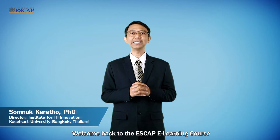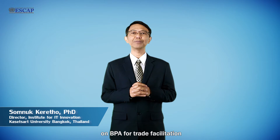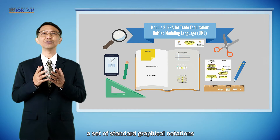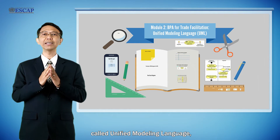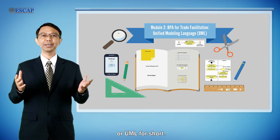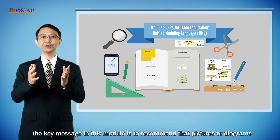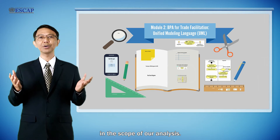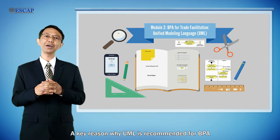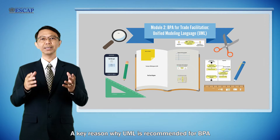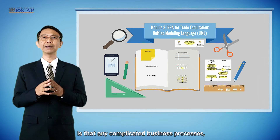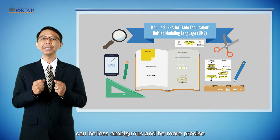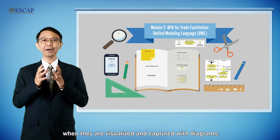Welcome back to the SCAP e-learning course on BPA for trade facilitation. In this module we are going to introduce a set of standard graphical notations called Unified Modeling Language, or UML for short. The key message in this module is to recommend that pictures or diagrams be used to capture and describe business processes in the scope of our analysis. A key reason why UML is recommended for BPA is that complicated business processes, especially those related to international trade transactions, can be less ambiguous and more precise when they are visualized and captured with diagrams.